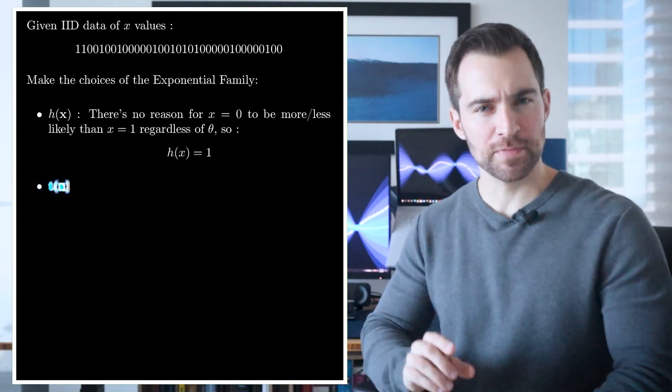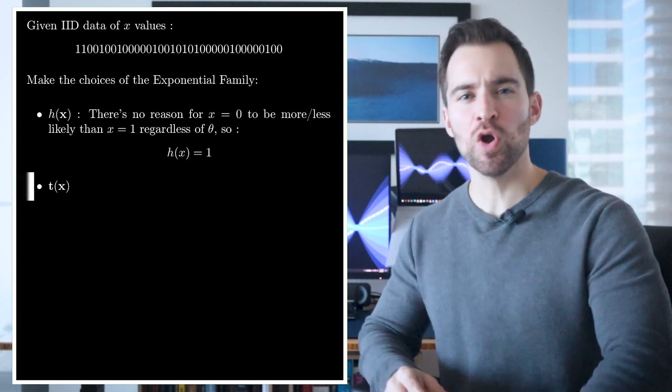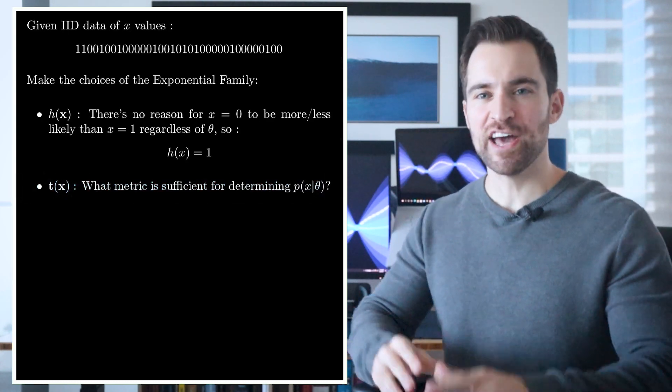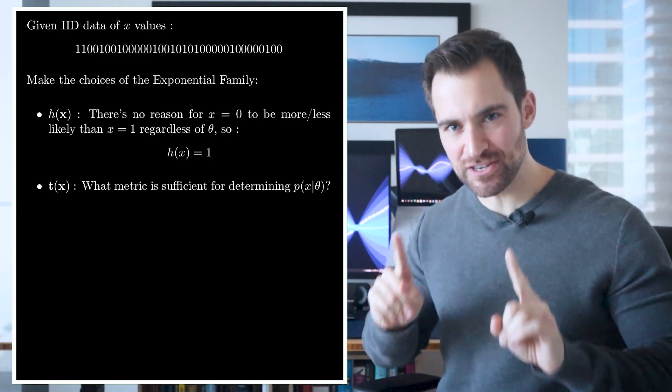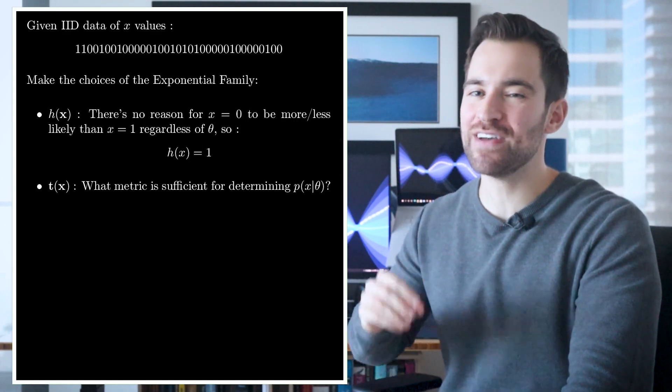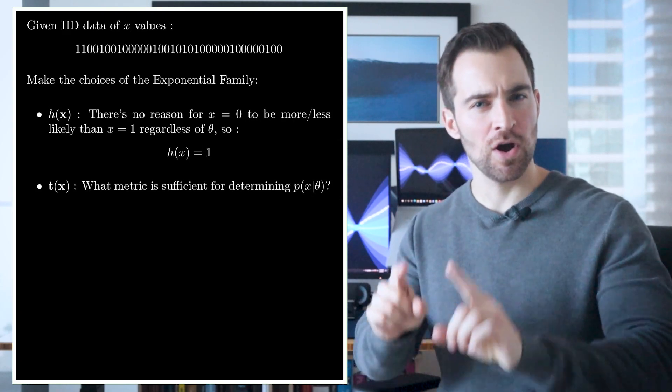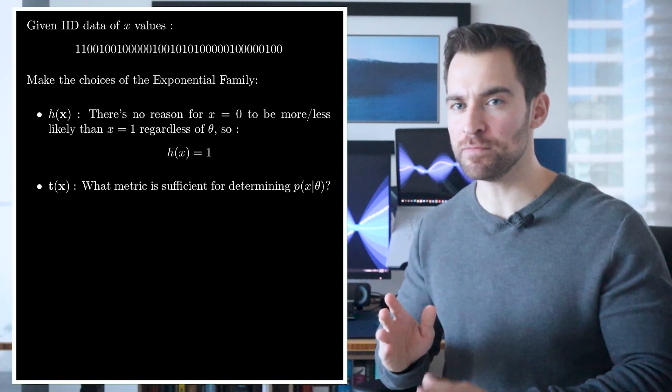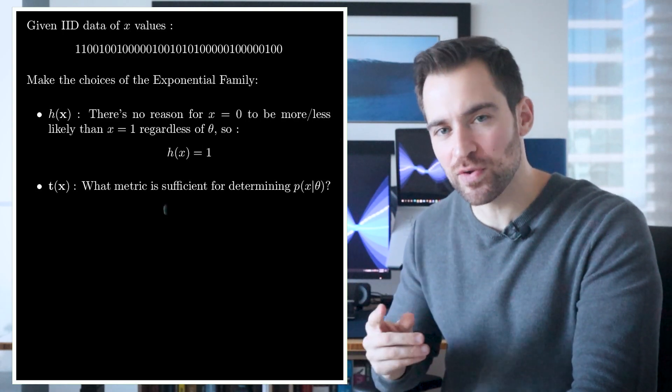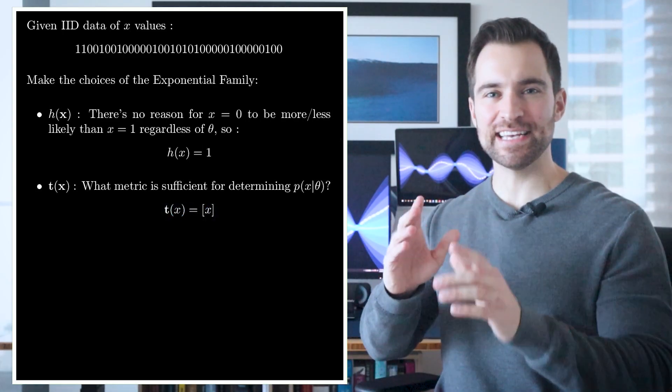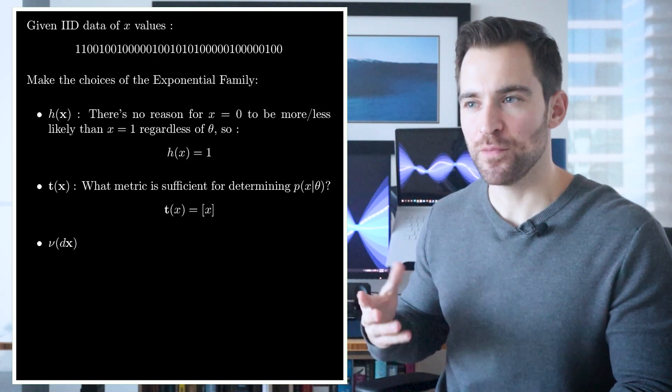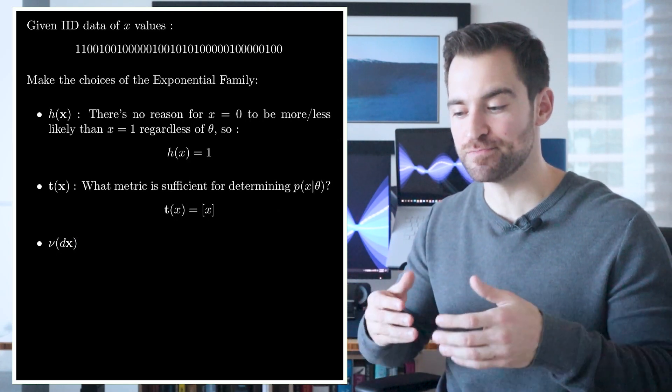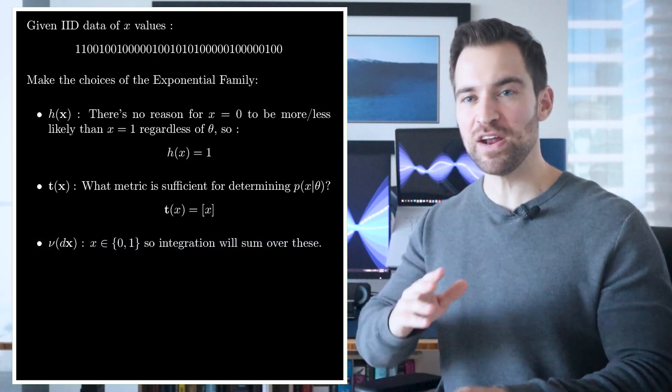Okay, but what about t of x? A good question to ask here is, what should we know about an observation that provides everything we need, everything that is sufficient for determining the probability of x given the parameters? Well, there's only one thing to know, whether it's 0 or 1. So let's just return that value in a length 1 vector. Lastly, how do we sum over these events? Well, there are only two, so we'll just sum over those. With that, we've made all our choices.